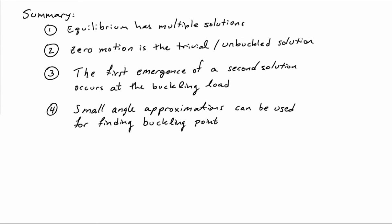One of the things that goes hand-in-hand with that is that one can typically make a small motion or small angle approximation when you're trying to find the buckling point, because you're trying to find a second solution near the trivial solution, so you're looking for small perturbations. That can help with making the analysis quite a bit easier.